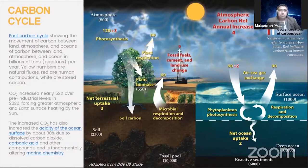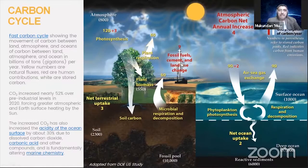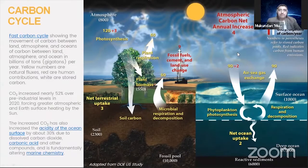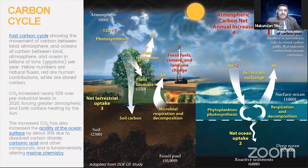Every year there has been a significant increase. You can see 9 gigatons of CO2 increase because of fossil fuels, cement, and land use change, plus another 2% here. The overall atmospheric carbon net increase is about 4%, which is significant — and that's what's driving the question of what have we done to the environment? Are we even capable of making such massive changes? And it's affecting us in a big way.